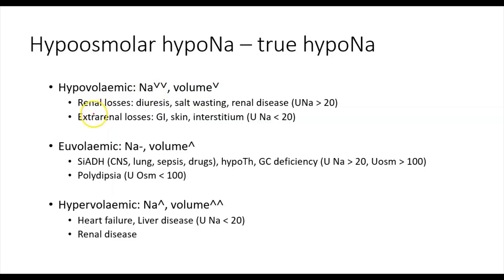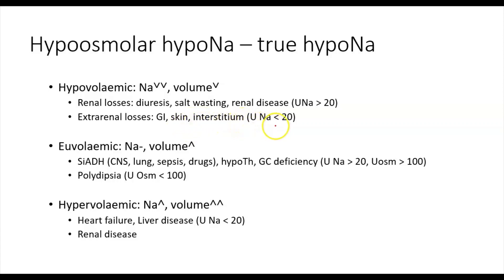When a patient has hypovolemic hyponatremia, you can use urine sodium to distinguish between renal and extra-renal losses. In renal losses, some pathology prevents the nephrons from reabsorbing sodium, so urine sodium is more than 20 millimoles per liter. In extra-renal losses, sodium is lost before reaching the kidney, and with an activated renin-angiotensin-aldosterone system causing increased sodium reabsorption, the urine sodium is less than 20 millimoles per liter.